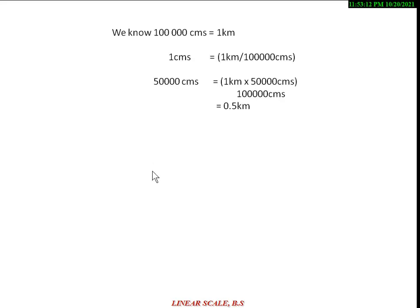First, we know 1 lakh centimeter equals to 1 km. So 1 cm equals to 1 km divided by 1 lakh cm. The RF value is 1 is to 50,000, so we put down 50,000 and after that we get 0.5 km per centimeter on the map.